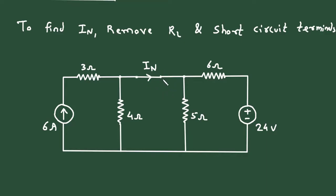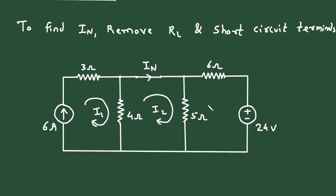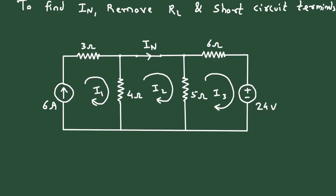Now, we have to find this In. Let's find it by using mesh analysis. This is mesh number 1 with current I1, this is mesh number 2 with current I2, and this is mesh number 3 with current I3. Here we can clearly see I1 is equal to 6 Ampere.